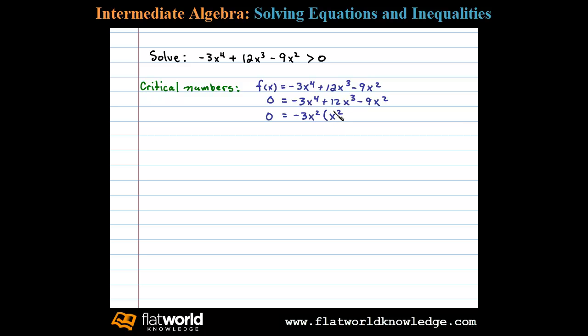Factoring further, we have -3x² times (x - 1) times (x - 3). If they're both negative, that adds up to -4. Negative 1 times negative 3 is positive 3. So at this point we can set each factor equal to 0.